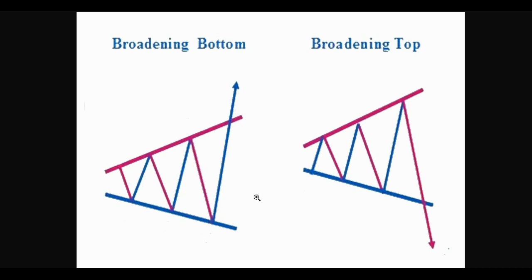Most people would consider it bullish if it escapes from the megaphone to the upside with a clear break — if one of the candles breaks, and better yet closes clearly above the top of the megaphone, that could be considered bullish and it could be considered a bottom. On the other hand, if it breaks down to the downside and the candlestick closes clearly below the bottom of the megaphone pattern, that could be considered bearish and a broadening top.